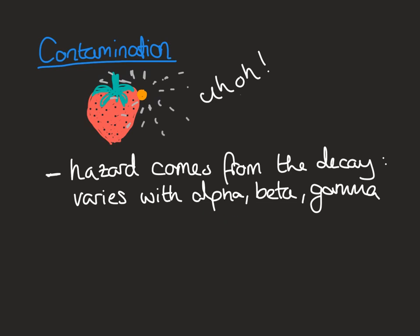We know that alpha particles can't travel through bits of paper. So if you've got alpha particles on your skin, the hazard wouldn't be that severe because the decay particles couldn't travel through your skin and expose the internal part of your body to radiation. However, if the alpha particles had contaminated your fingers and you then put your fingers in your mouth, the alpha particles would be inside you. Your internal organs are very soft and can get ionized very easily — being exposed to these really ionizing alpha particles, which even though they only travel short distances, are really damaging.